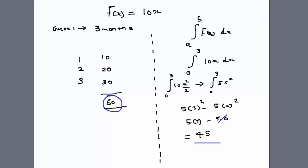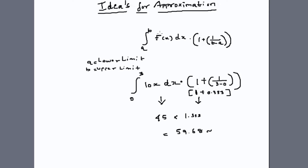Here is my rule of approximation. You take the same integral result and multiply it by an approximation factor: (1 + 1/(b − a)). For bounds 0 to 3, that is 1 + 1/3, which equals 1.333. Multiplying 45 by 1.333 gives roughly 60. So if you apply the approximation factor, you actually get your answer.